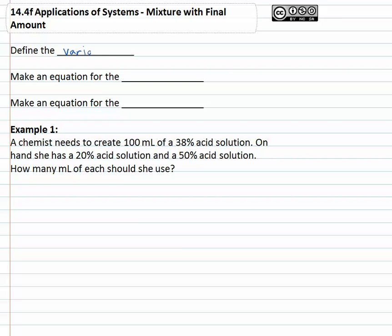We'll start by defining the variables so we know what the variable represents as we solve and use that to make an equation for the amount of stuff we're working with and also an equation that talks about how the mixture is created.